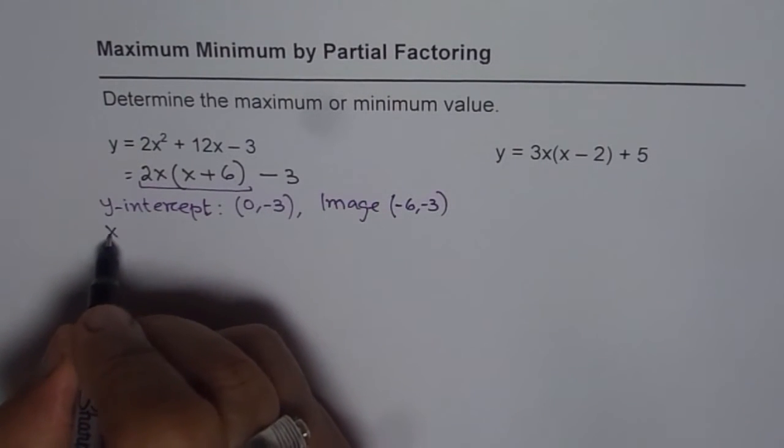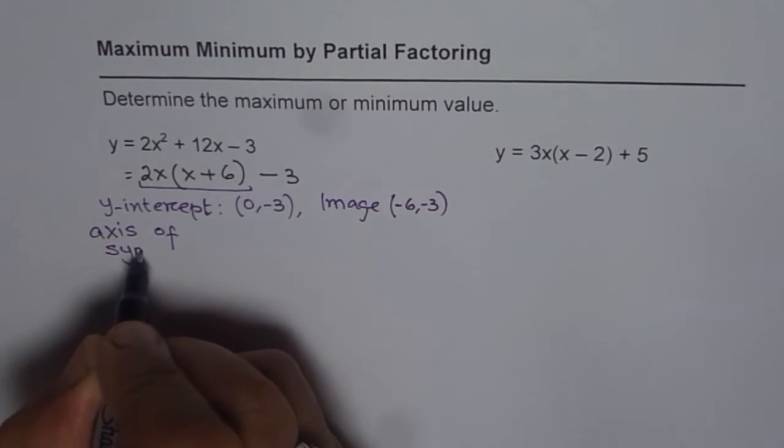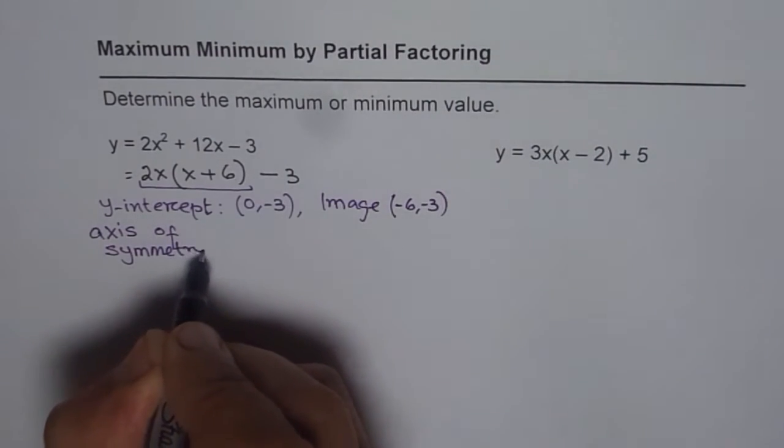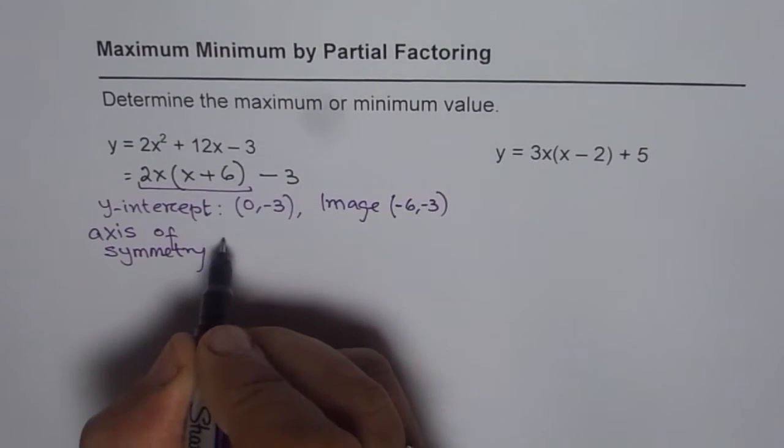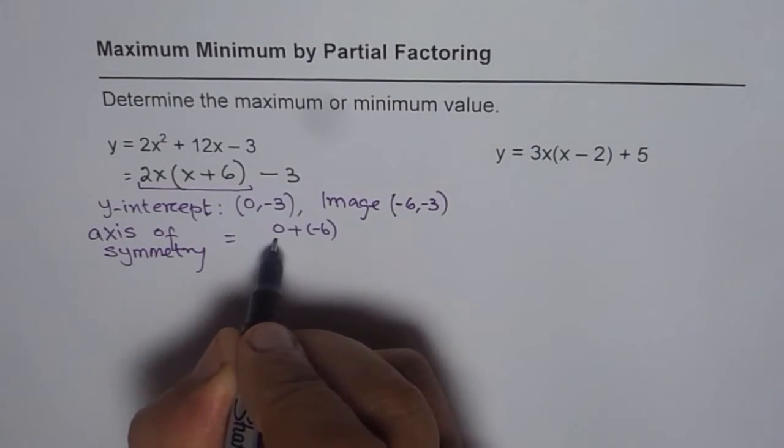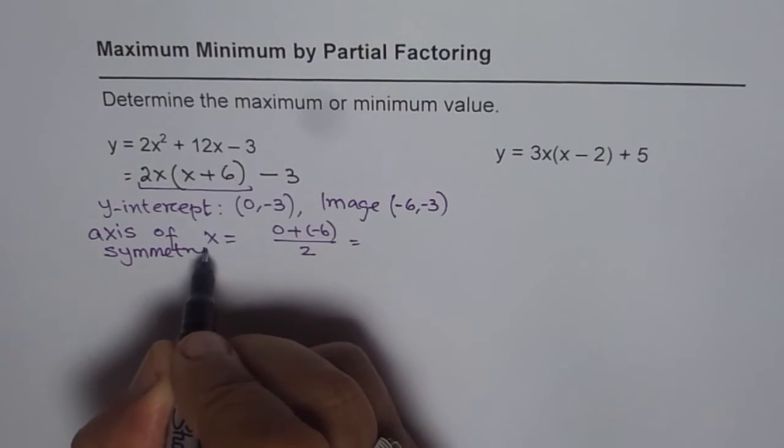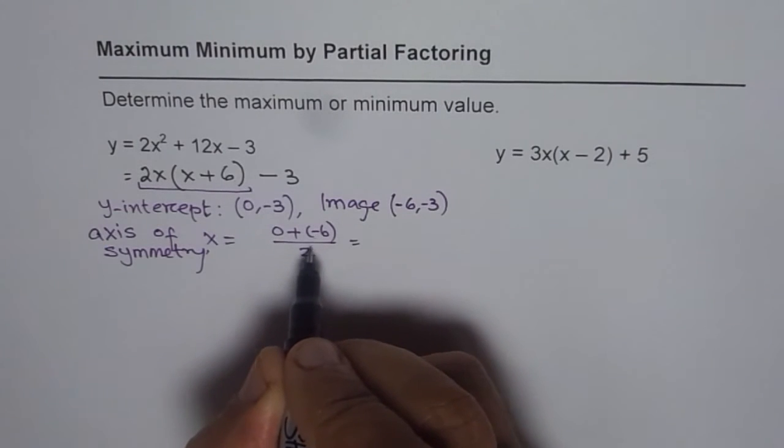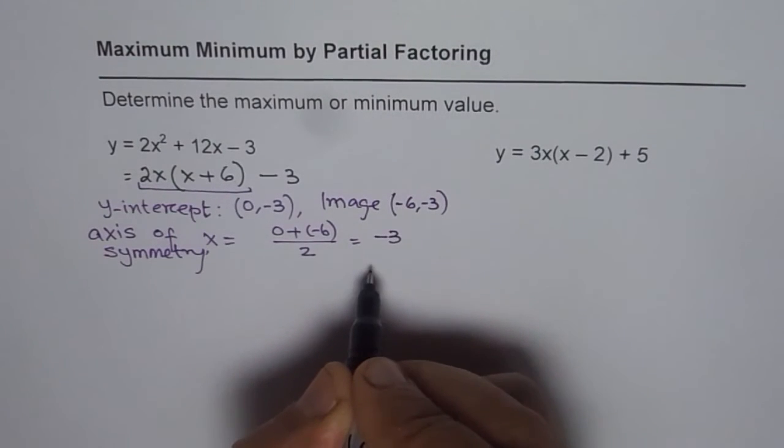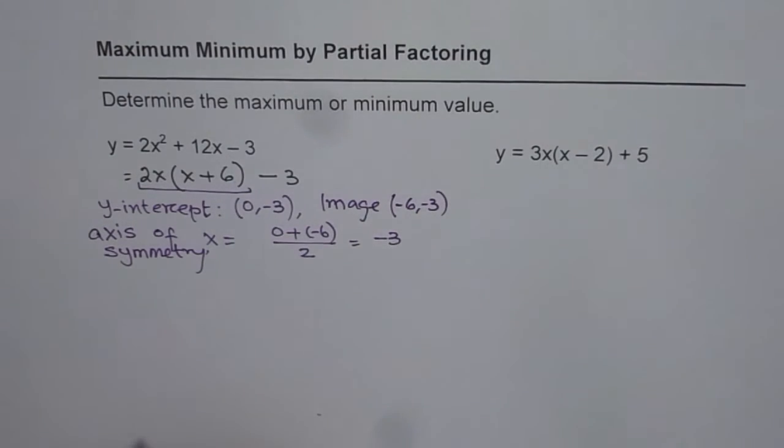So, axis of symmetry will be average of these two values, which is 0 plus minus 6 divided by 2. So, that gives us the value of x as equal to minus 6 divided by 2 as minus 3. So, vertex will be on axis of symmetry.